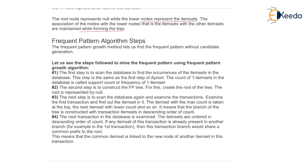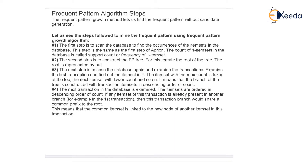Now we will see the Frequent Pattern algorithm stepwise. In the first step, scan the database to find the occurrence of item sets — this step is the same as the first step of Apriori. The count of each item in the database is called the support count or frequency of a one-item set. The second step is to construct the FP tree: create the root of the tree, represented by null. The third step is to scan the database again and examine each transaction. The item set with the max count is taken at the top, and the branch of the tree is constructed with transaction item sets in descending order of count.